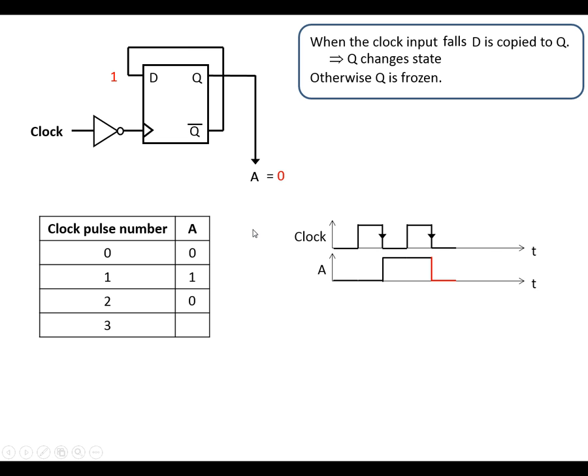Next clock pulse coming in, A is going to go high. And then Q bar goes low. So what we see happening, every time a clock pulse comes in, A changes state. So it's going 0, 1, 0, 1. We can call this a 1 bit counter because it's just counting 0, 1, 0, 1 on every clock pulse.